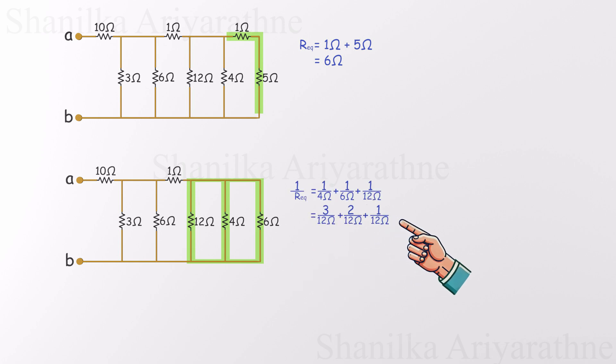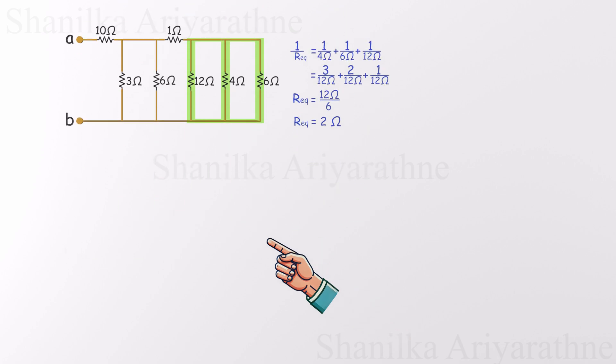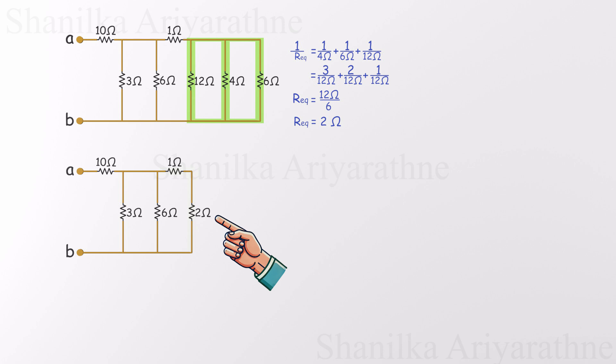Since 12 is a common multiple, the math works out smoothly. We calculate the equivalent resistance for all three in parallel, and the result is a clean, simple two ohms. Just like that, we've replaced a messy trio with a single, tidy resistor. Let's redraw the circuit once more and appreciate how much cleaner it's becoming with each simplification.